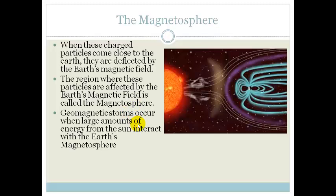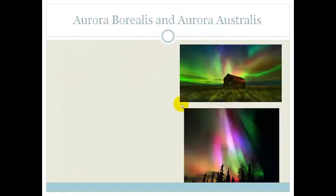Geomagnetic storms occur when large amounts of energy from the Sun interact with the Earth's magnetosphere. And this can interfere with electric and magnetic systems, power grids, and cell phone networks. So if the cell phone network goes out or power grid goes out, sometimes it's caused by these giant electromagnetic storms that are caused by the solar flares and the solar winds.